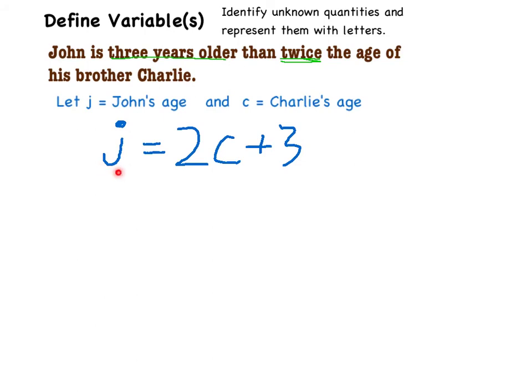However, this isn't something I can solve for one of these variables right now. In fact, John's age and Charlie's age could be a number of different things that could make this equation true.